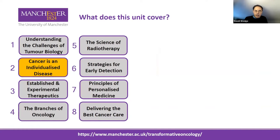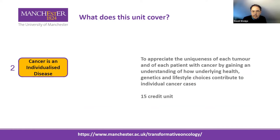The Transformative Oncology course as a whole is composed of eight units, and the unit I'll be talking about today is Unit 2, Cancer is an Individualised Disease. You can see here how it fits into the course as a whole. This unit will help you to appreciate the uniqueness of each tumour and each patient with cancer, by gaining an understanding of how underlying health, genetics and lifestyle choices contribute to individual cancer cases. This is a 15-credit unit.